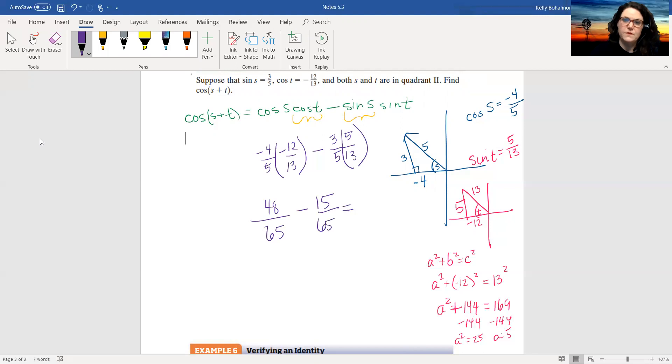So I end up getting 33 over 65. And I don't think that simplifies because 33 is only divisible by 3 and 11 and 65 is not divisible by either. So that's your final answer.